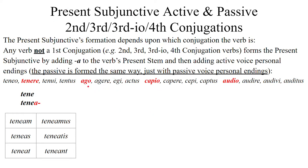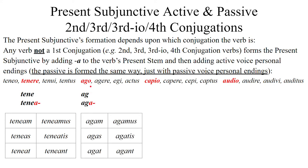For the third conjugation, like ago, agere, egi, actus — we shift gears a little bit. The present stem of a third conjugation is found by going to the first principal part and chopping off the letter O. So we have ago, chop off the O, we get the stem ag-, then add the letter A. So we get aga-: agam, agas, agat, agamus, agatis, agant. And for the passive voice, exchange the active endings for passive: agar, agaris, agatur, agamur, agamini, agantur.